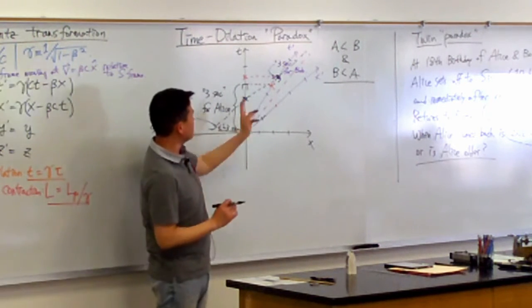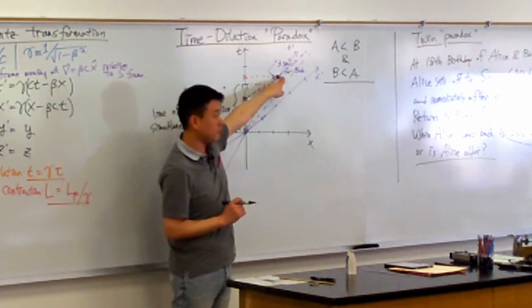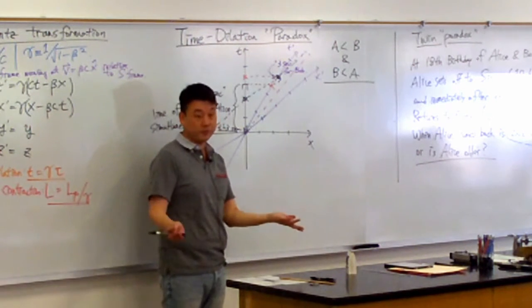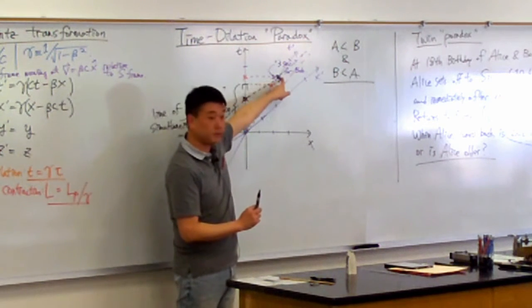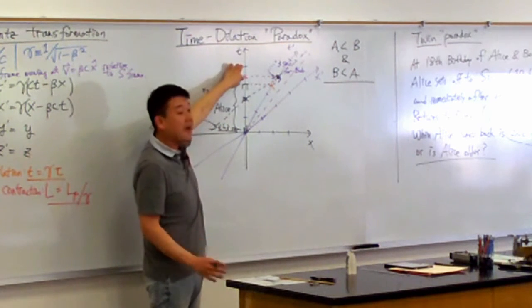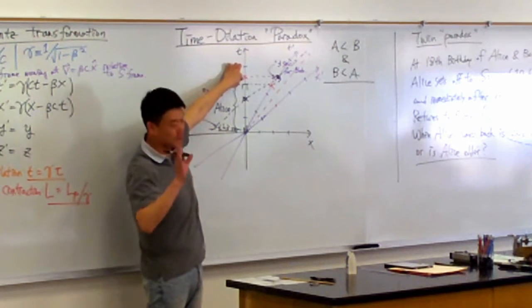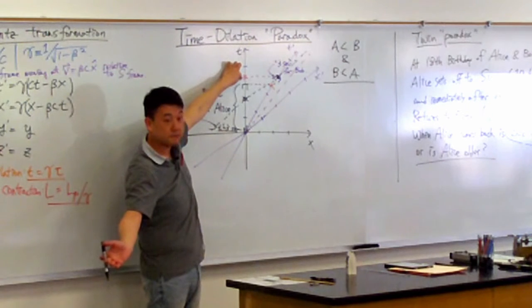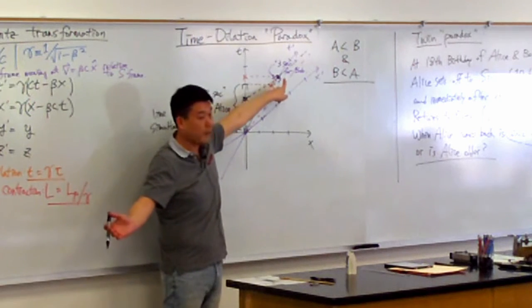So when Bob sees you comparing this space-time coordinate with this space-time coordinate, he's looking at you like a crazy person, because why are you comparing those two points that have no meaning to me? For Bob, the two special points that are simultaneous are this point with that point. Now, what this point represents is, this point represents when Alice would see Bob's clock strike three, sorry, when Alice would observe Bob's clock striking three seconds. That's what this point represents. But once again, that has no meaning for Bob, because they are, these two are not simultaneous for Bob, only for Alice.